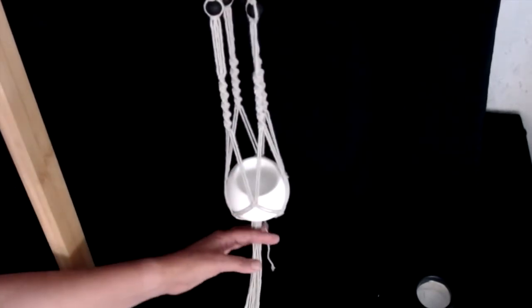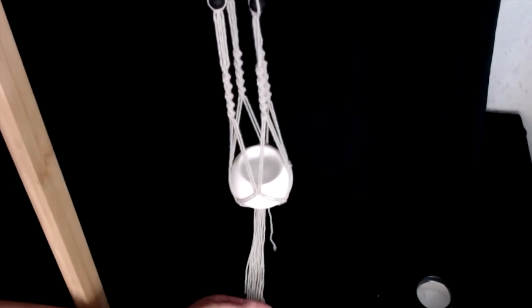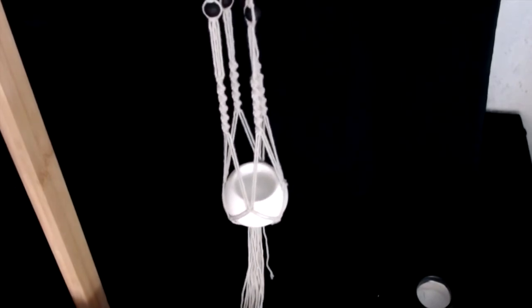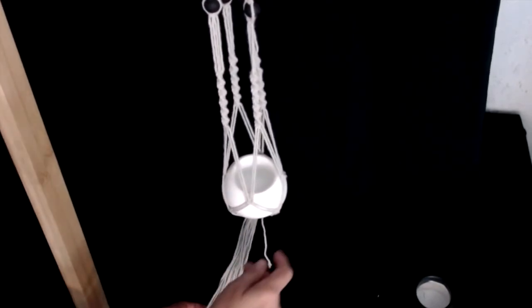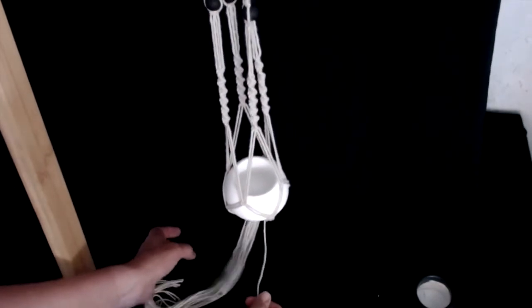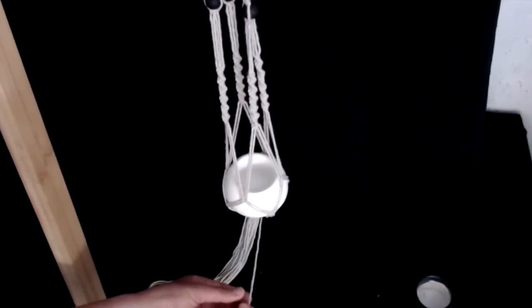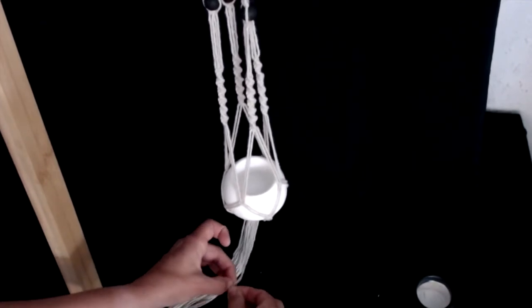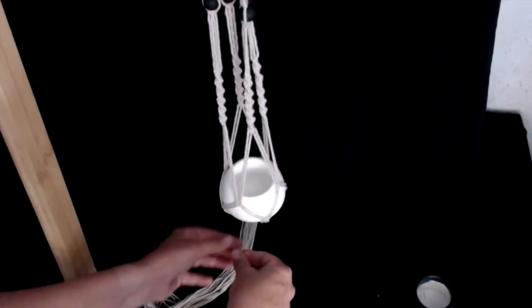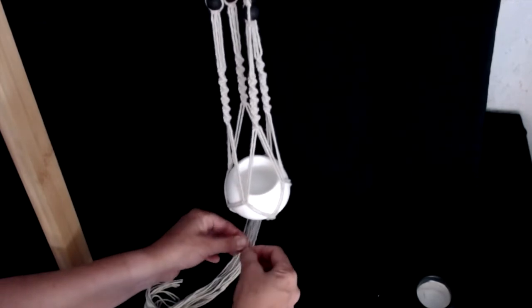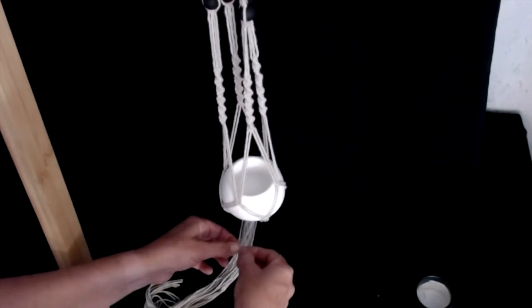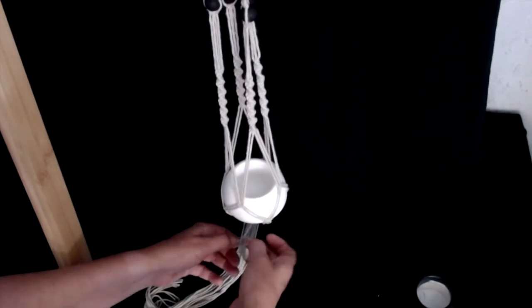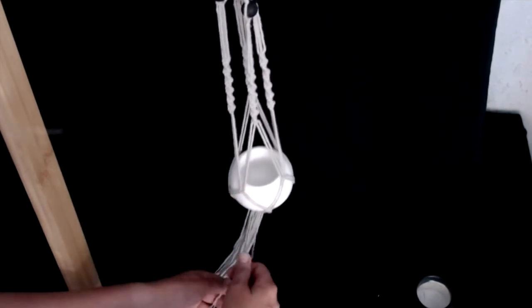This completes your plant hanger. Remember you can choose how long you want your tassel to be. I like to leave mine quite long. When you have some time later you can unravel all of this and get your hair comb and undo the ply of your cotton. This will give it much more of a tassel finish.